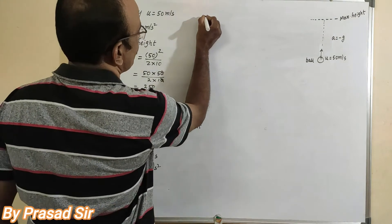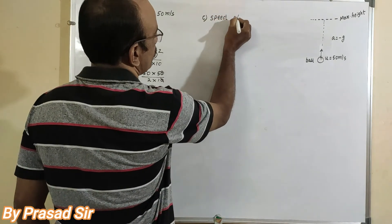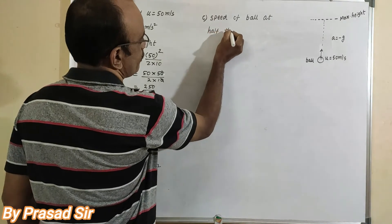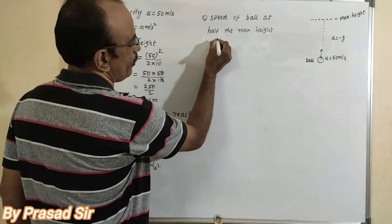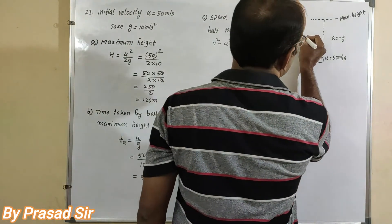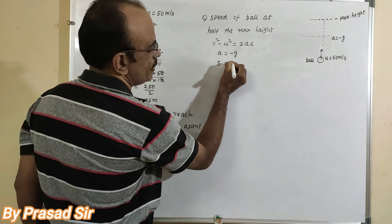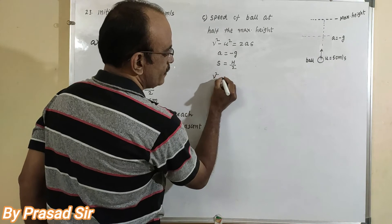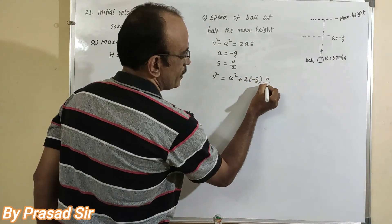Now we want to calculate part C: the speed of the ball at half the maximum height. We use the formula v squared minus u squared equal to 2as. The body is projected upward and reaches half the maximum height, so acceleration a equals minus g and displacement s equals h divided by 2, which is 125 divided by 2. Therefore, v squared equals u squared plus 2 into minus g into h by 2.